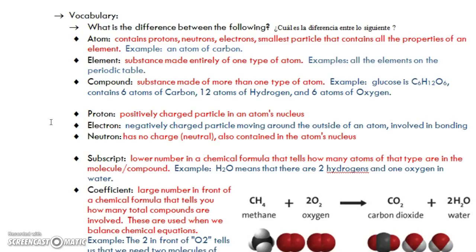A subscript is a lower number in a chemical formula. It tells you how many atoms are there. So H2O, the 2 refers to the H. So just like in math, if you had like 4 squared, this little 2 here means that we've just got 2 hydrogens, and here we've got 1 oxygen. There's no number there. Just like in math, if there's no number, we assume there's a 1. So once again, H2O says we've got 2 hydrogens, 1 oxygen.